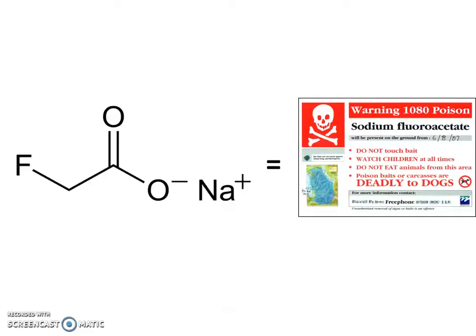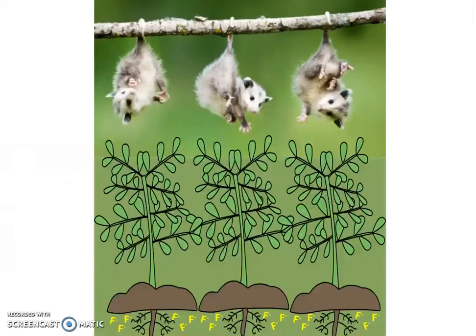To begin, the substrate, fluoroacetate, is highly toxic and directly interferes with the citric acid cycle in most animals. Not surprisingly, it's used as a pesticide in many parts of the world. However, there are over 40 species of plants that have evolved the capacity to extract trace fluoride salts from the ground and synthesize fluoroacetate, giving them a protective advantage over hungry herbivores.